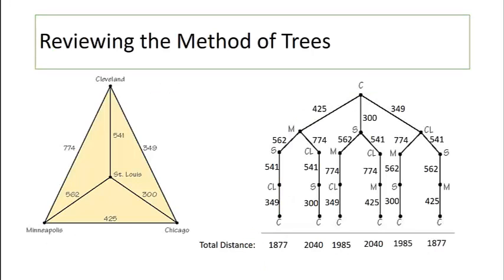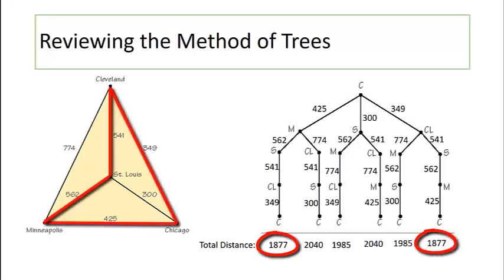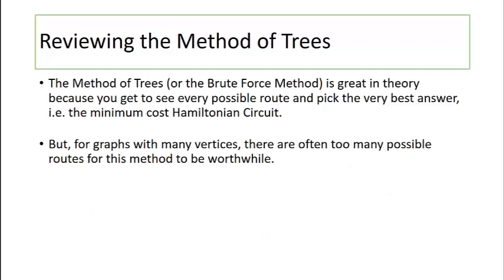In our last video we learned the method of trees. In the method of trees you make a list of all possible Hamiltonian circuits for a given graph, determine the total distance among each of the circuits, and then select the tour which has the absolute minimum distance. The method of trees, sometimes called the brute force method, is great in theory because you get to see every possible route and pick the absolute minimum cost Hamiltonian circuit. But for graphs with many vertices there are often too many possible routes for this method to be worthwhile.